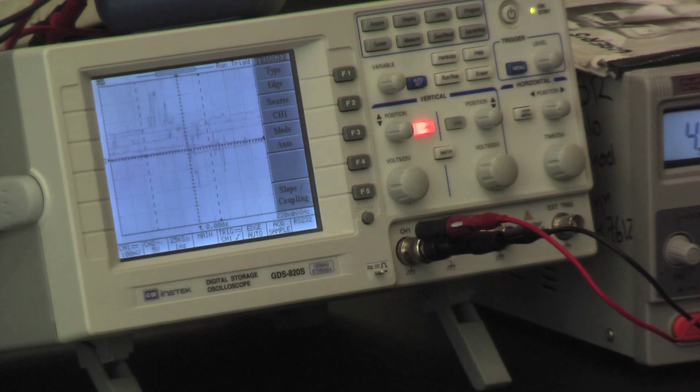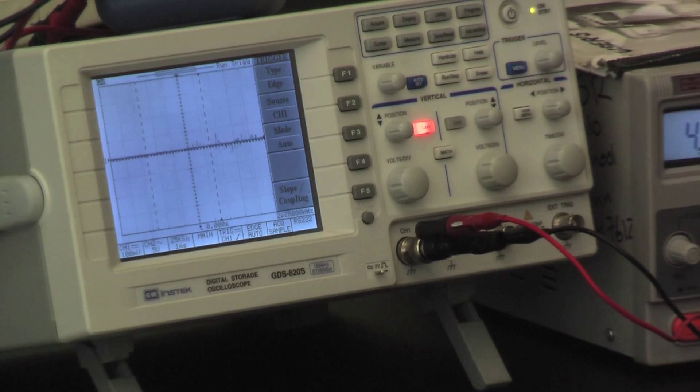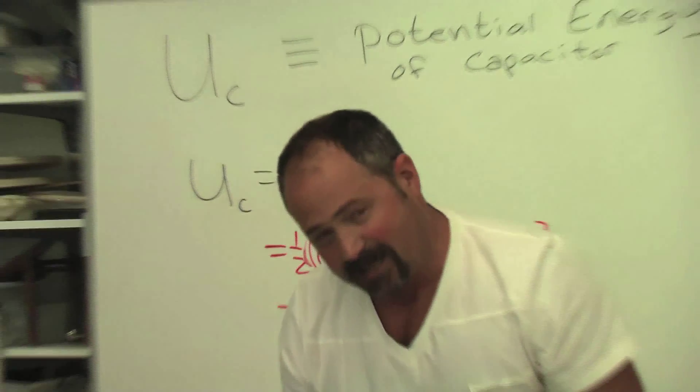Now, why do you get DC electricity out? You really should get AC. As the coil spins this way, you get a positive voltage. Then the flux reverses direction with the magnetic field. You get a negative voltage.